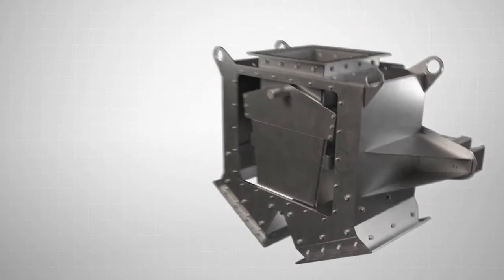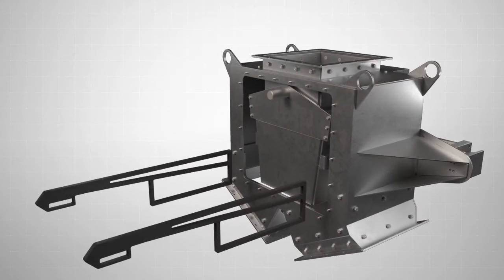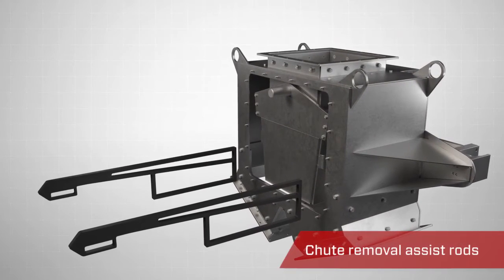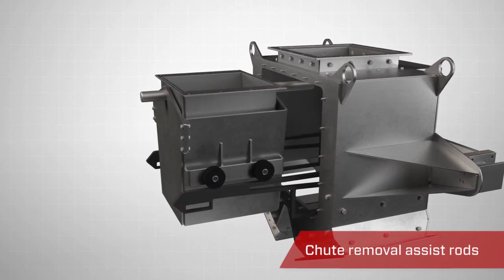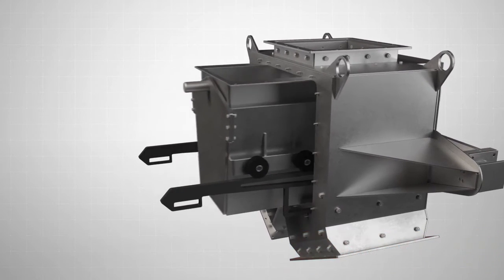For larger valve sizes, the pivoting shoot diverter includes optional shoot removal assist rods. These allow the heavy shoots to be slid out of the valve for easier handling.